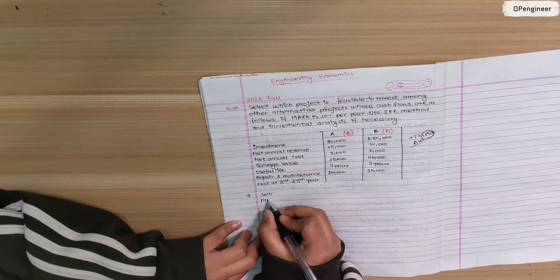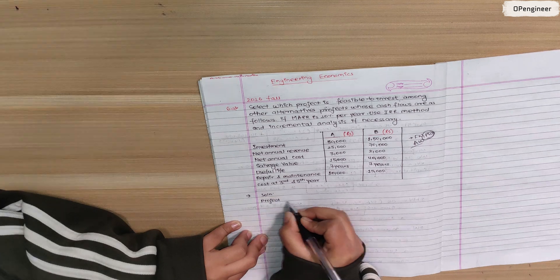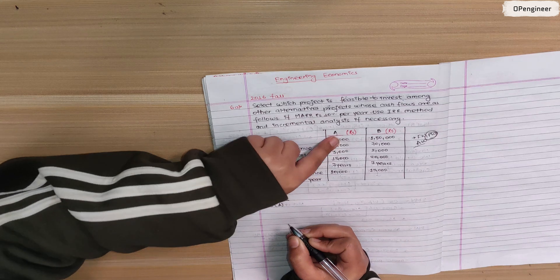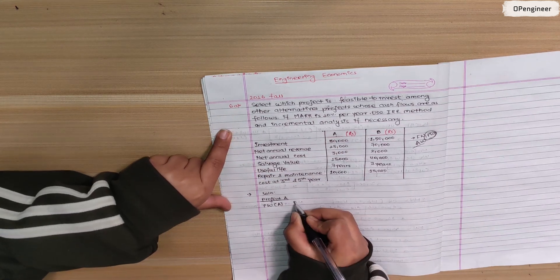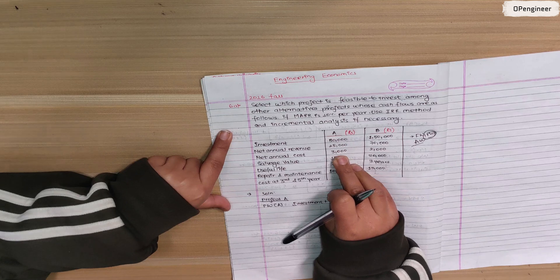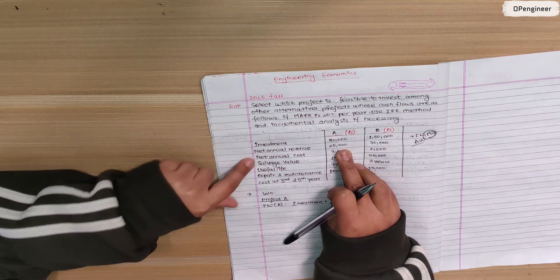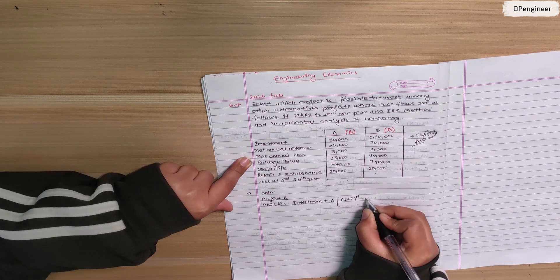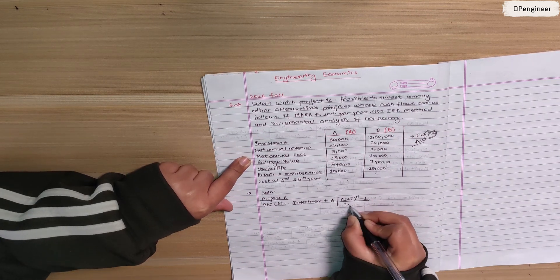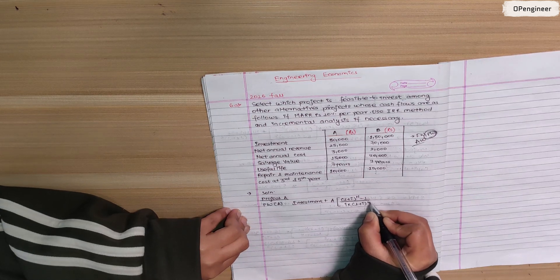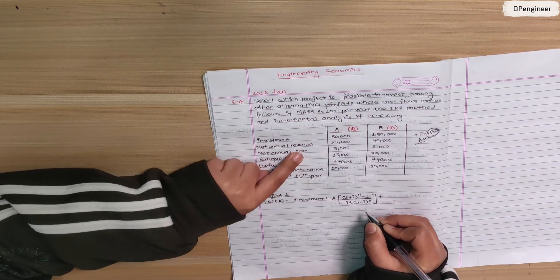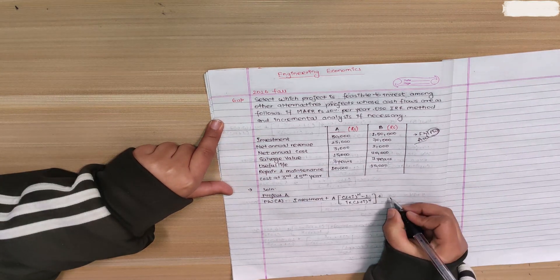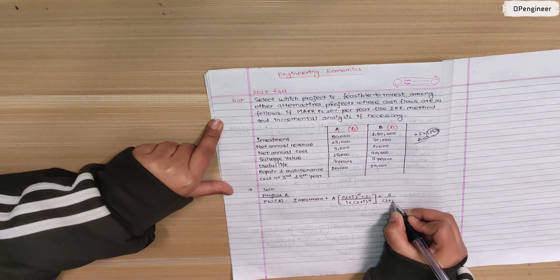Solution: Start with Project A. Calculate the present worth of Project A. Begin with the investment term, then add the annual revenue converted to present using the formula: A times [(1+i)^n - 1] / [i(1+i)^n]. Then add the salvage value S converted to present: S / (1+i)^n.